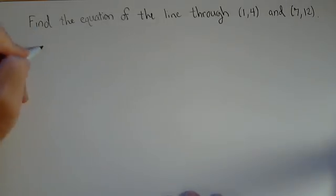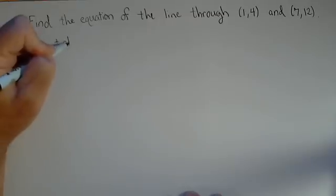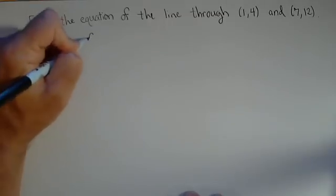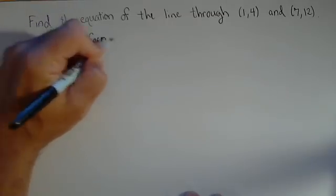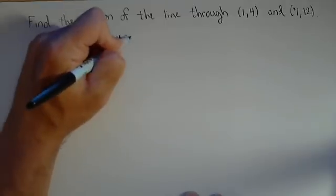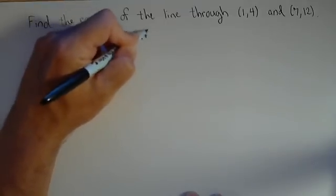Now, remember, we have point slope form of a linear function, which looks like y equals mx plus b.